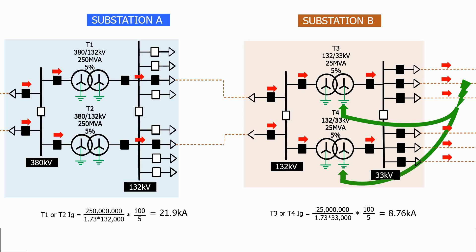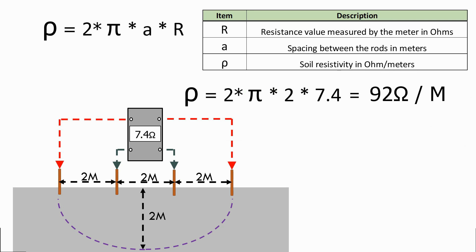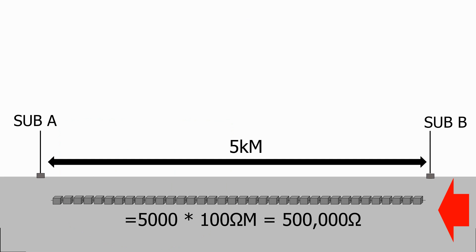Soil resistivity is a key parameter which dictates what happens inside a substation when a ground fault occurs. We will see how soil resistivity is measured and learn what effect it has on the flow of ground current around the network.